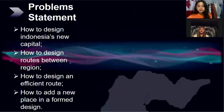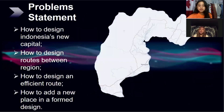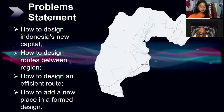Our problem statement is: how to design Indonesia's new capital, how to design routes between regions, how to design an efficient route, and how to add a new place in a form design. This is the map of North Penajam Paser and Kutai Kartanegara.